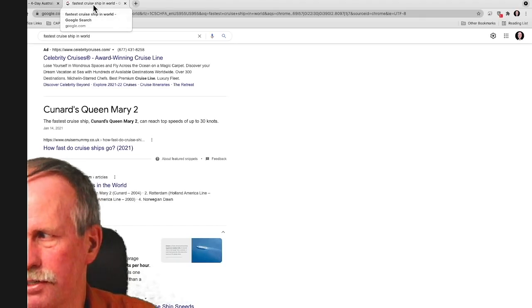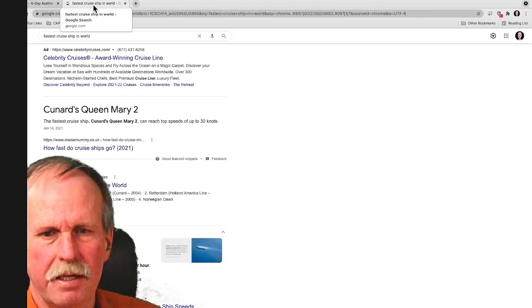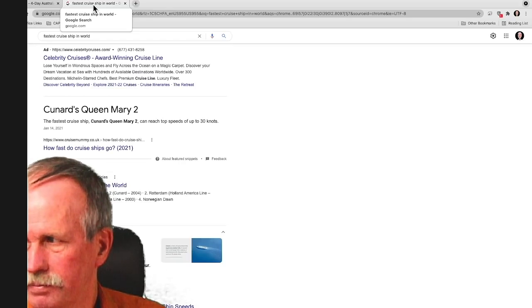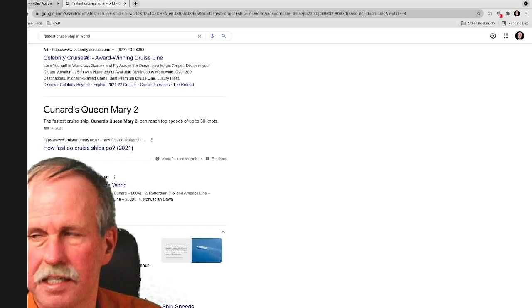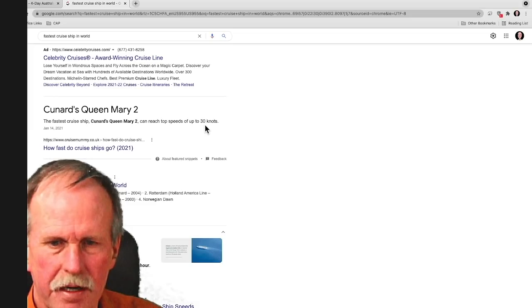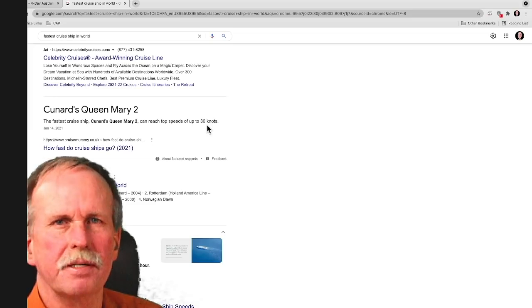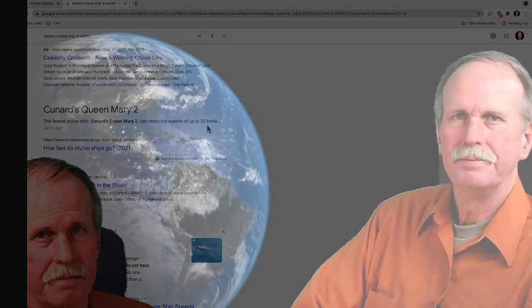Let's do a search for the fastest cruise ship in the world. And according to this, it's the Queen Mary 2. Let's look right there. What's that say? So it can reach top speeds of up to 30 knots. That's a long ways from over 46.